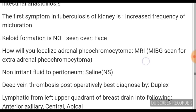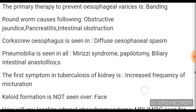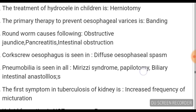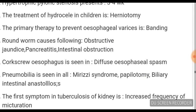The first symptom in tuberculosis of the kidney is increased frequency of micturition. Roundworm can cause the following: obstructive jaundice, pancreatitis, intestinal obstruction. Corkscrew oesophagus is characteristically seen in diffuse oesophageal spasm.